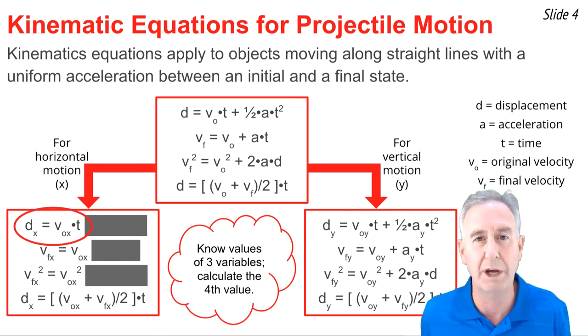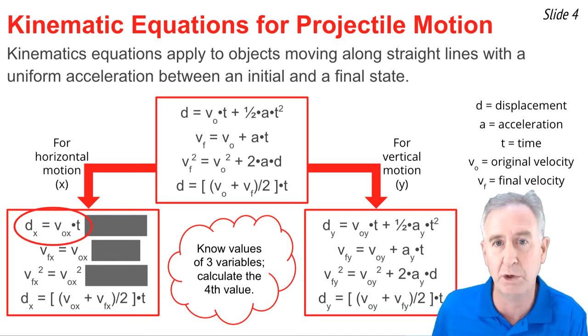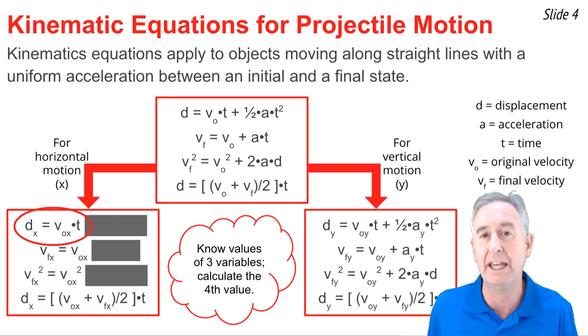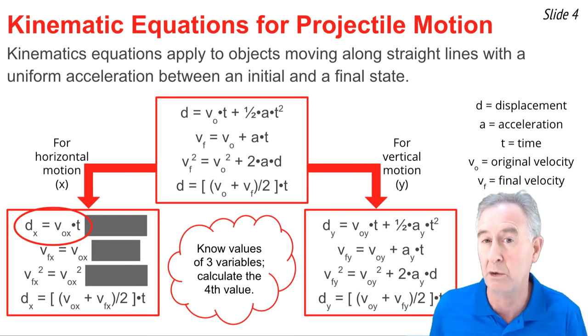Now for the y equations, we happen to know that Ay is negative 9.8, so I can substitute that in for Ay in each of the equations it shows up, and the formulas simplify to this form.